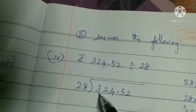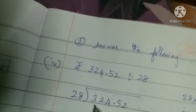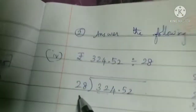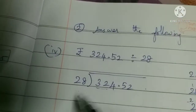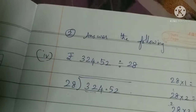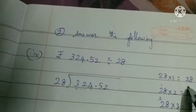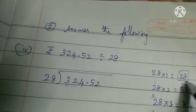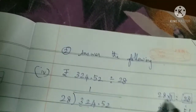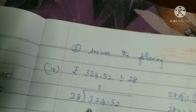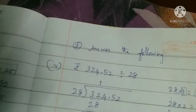Now let us take the first digit — 3. It is smaller than 28, so we cannot divide. We take 32 instead. 32 is greater than 28. We cannot take 56, so we take 28. 28 goes into 32 one time. Write 1 here. 28×1=28.